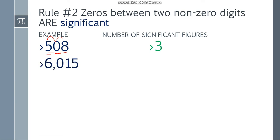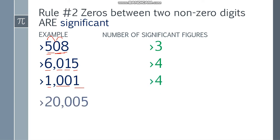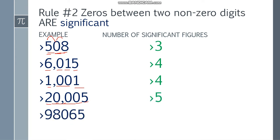Next one, 6,015 — nasa gitna yung zero ng mga non-zero digits, so 6,015 — apat. Next one, 1,001 — yung dalawang zero nasa gitna, so counted siya as a significant figure — apat din. 20,005 — yung tatlong zero nasa gitna ng non-zero digits, so 1, 2, 3, 4, 5 — we have 5 significant figures. And lastly, 98,065 — may zero tayo, kaso nasa gitna siya — 1, 2, 3, 4, 5 significant figures.